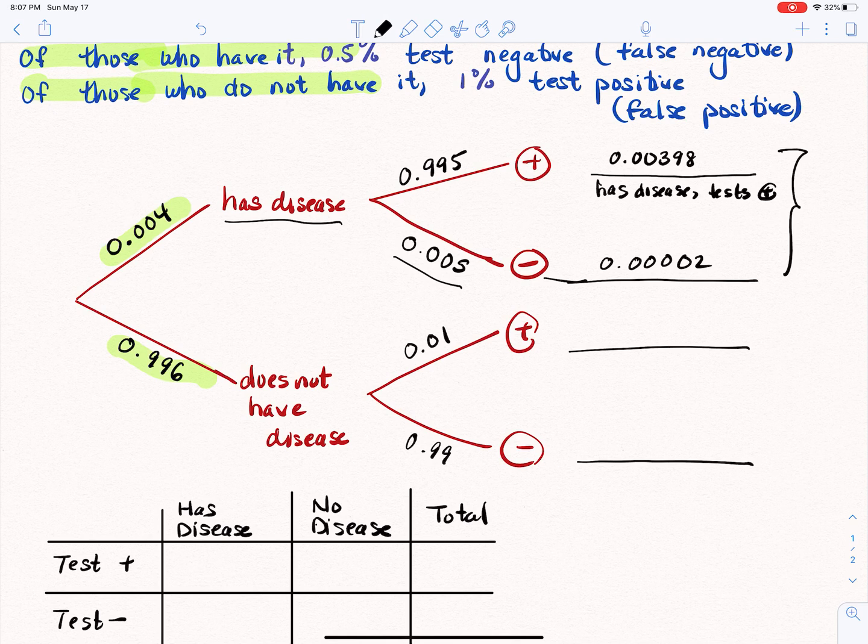So the same can be done for down here. So once we get the ones who do not have the disease, 1% of the 0.996 do not have the disease and manage to test positive. So multiplying those two together, we would end up with 0.00996. And if we were to multiply together, so it does not have the disease and test negative, that again should be a fairly large portion of the whole thing.